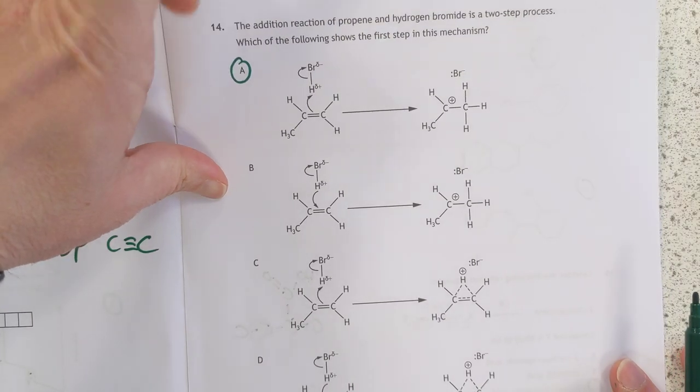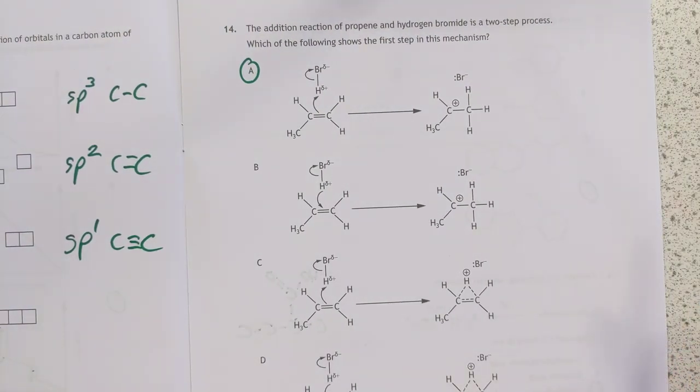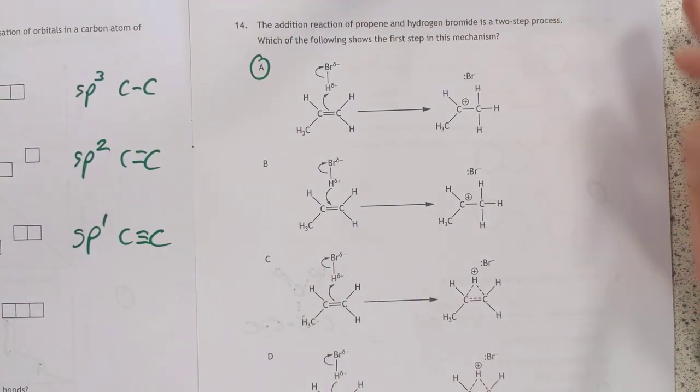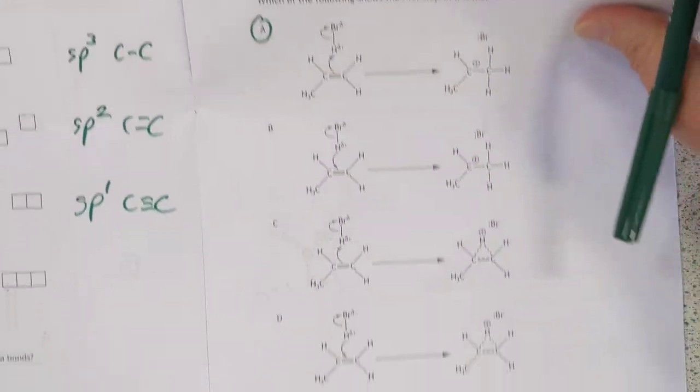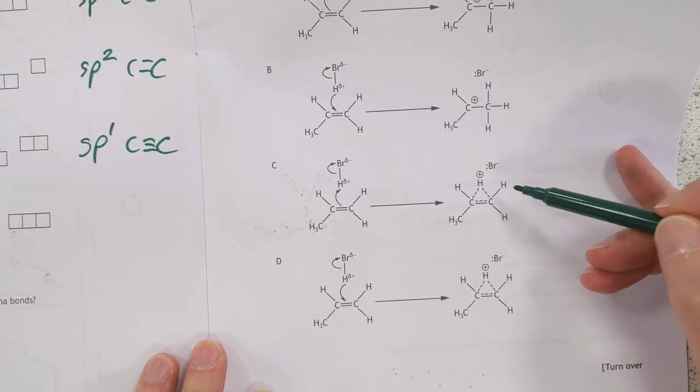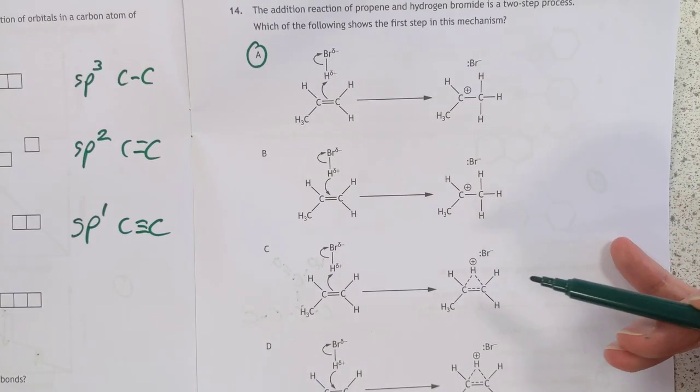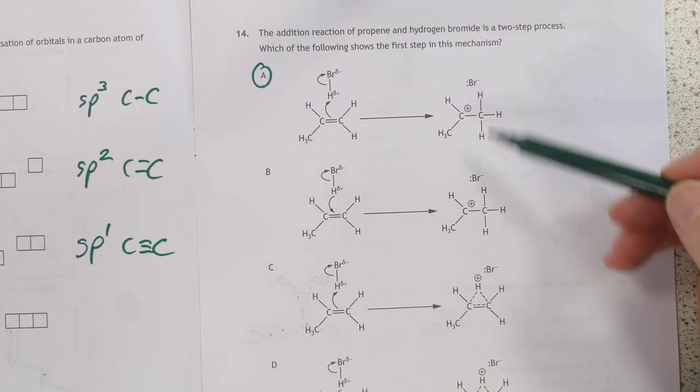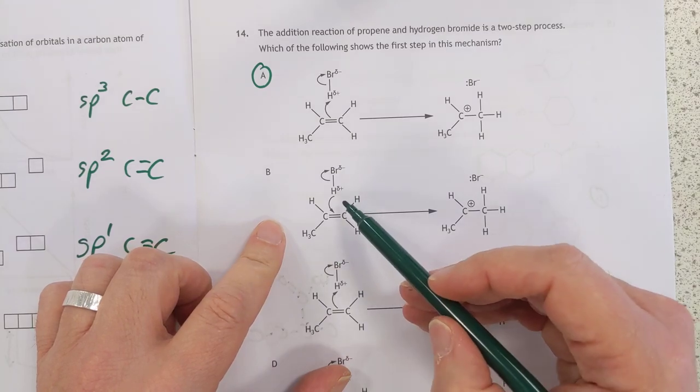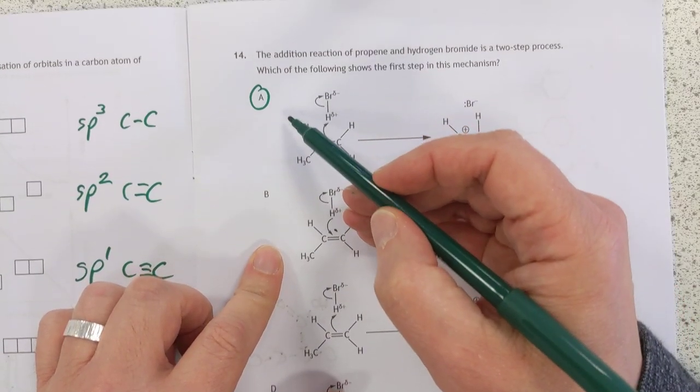Number 14. You just have to know your alkene addition mechanisms. It's definitely not C or D, because they involve a triangle intermediate, which is only true for bromines, not for hydrogens. So, carbocation, but the direction of electrons flow is wrong for this one, so it's A.